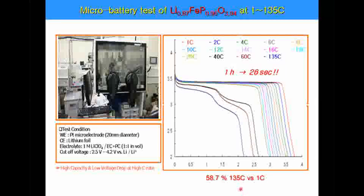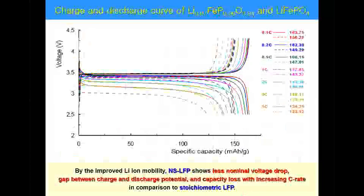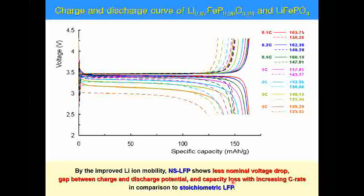We can see great stability over 400 cycles. In addition, by improved Li-ion mobility, non-stoichiometry LFP shows less nominal voltage drop, a smaller gap between charge and discharge potential, and less capacity loss with increasing C-rate compared to normal LFP.